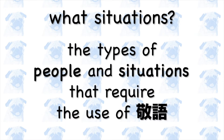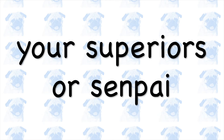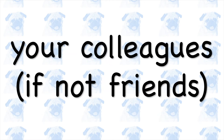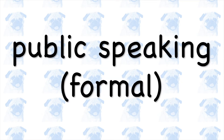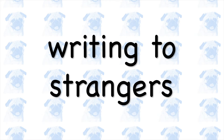Here's a list of the types of people you should use keigo towards, and the types of situations in which you should speak politely: 1. Towards people who are older than you. 2. Towards your superiors at work or your senpai. 3. Towards your colleagues you're not friends with. 4. Towards adults that you don't know well. 5. When you are speaking in public, in front of a group of people you're not friends with. 6. When you are writing to someone you don't know well, either in a letter, an email, or online.